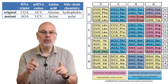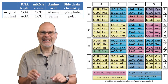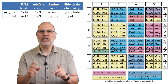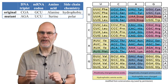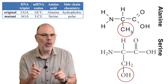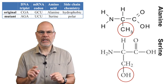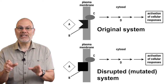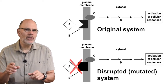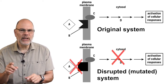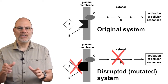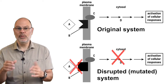CGA is transcribed to GCU, which translates into alanine. AGA is transcribed to UCU, which translates into serine. Alanine is hydrophobic; serine is polar — that's a big change. And when that receptor gets synthesized, it'll probably have a different shape. So the receptor won't bind with the ligand. That signaling pathway will stop. The system can't process the information — a type of disruption caused by mutation.